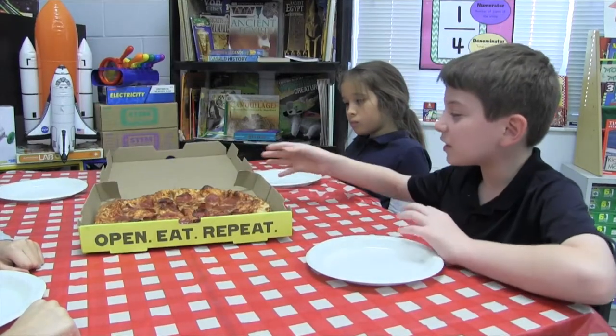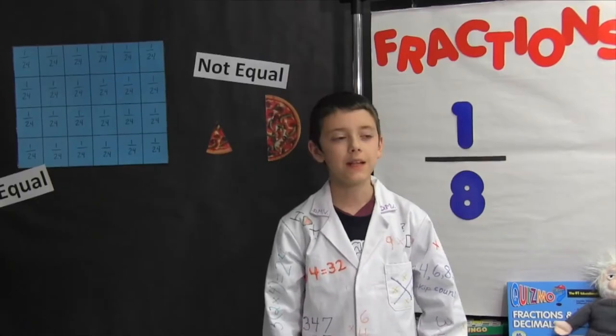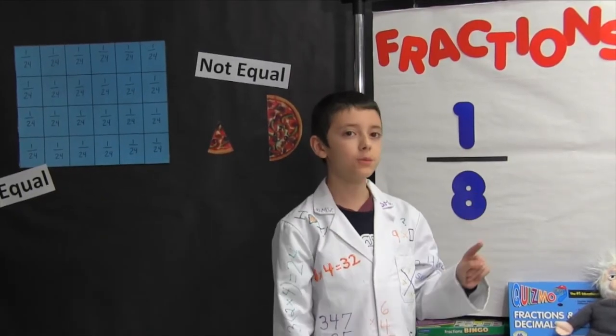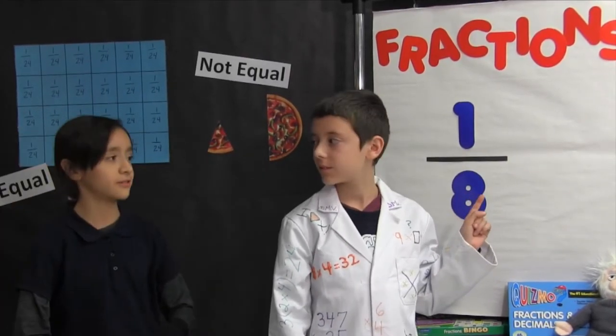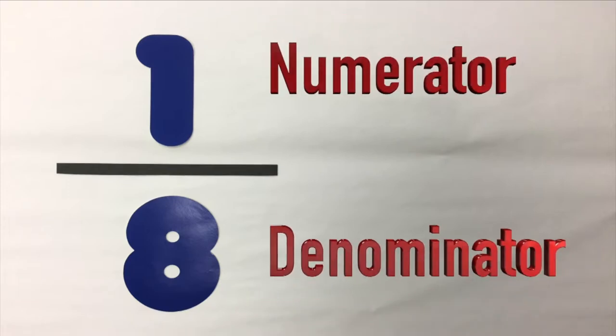The pizza is already cut. How do we know what fraction it is? The denominator goes on the top and the numerator goes on the bottom. Well, actually, the numerator goes on the top and the denominator goes on the bottom.